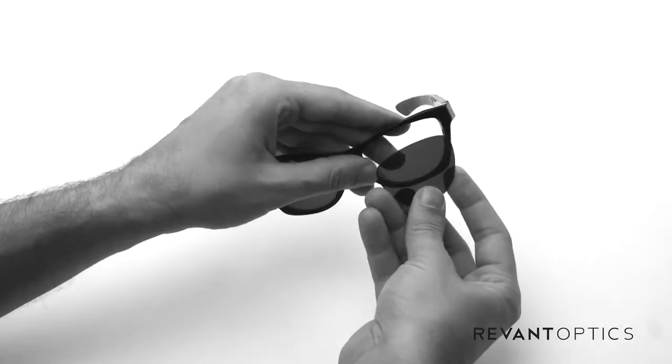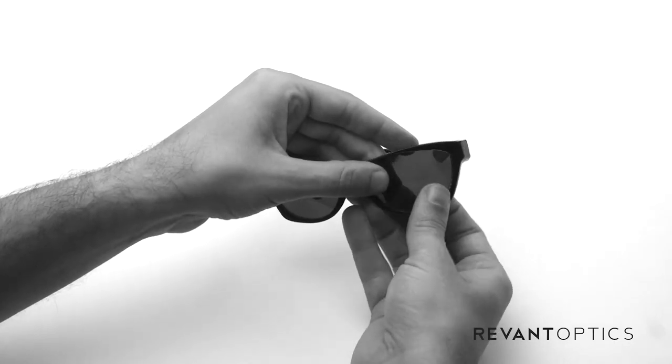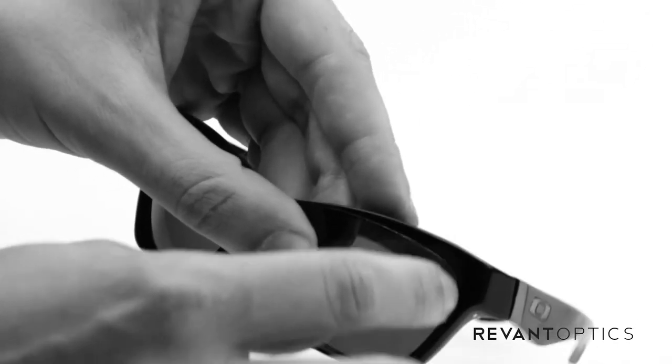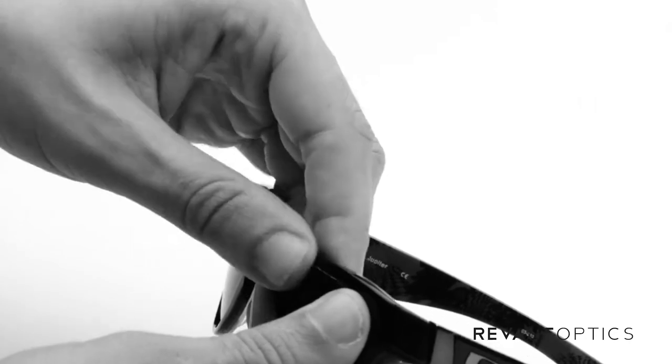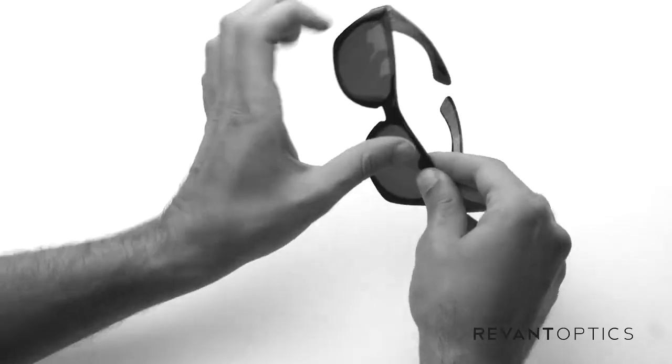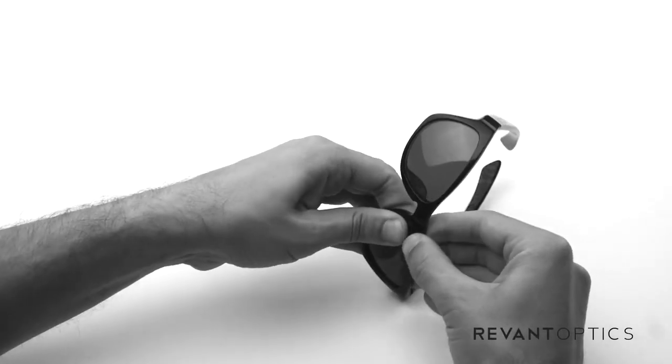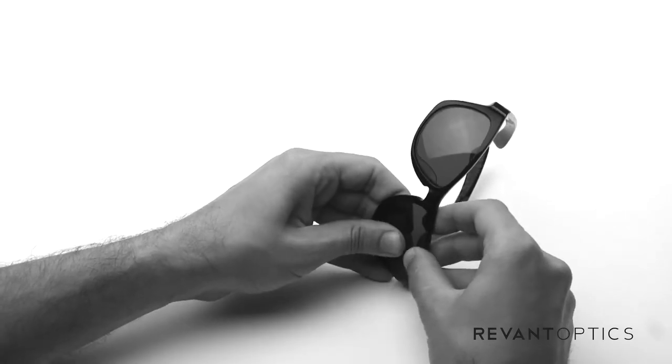Now to install them, go ahead and line up the outside edge with the groove, the outside edge of the groove here, and seat it in there, and then use your thumbs on the inside edge to push in. You might need to bend the lens a little to get it to seat in there.